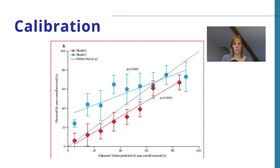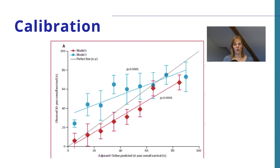You can see that these models are not performing really well because the lines are quite different from the dotted line in the middle. The calibration of the model is not good because it strongly differs from the dotted line. Calibration also shows you where the mistakes are. For the blue line, the observed outcomes are much higher than the predicted outcomes, which means the prediction underestimates the actual outcome. For the red line, this is actually the opposite. This can really help you to understand where your model makes mistakes and may even help you to improve the outcomes of your model.